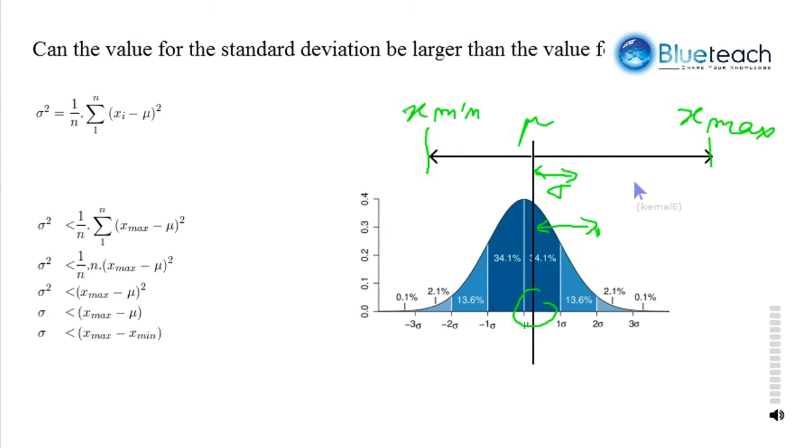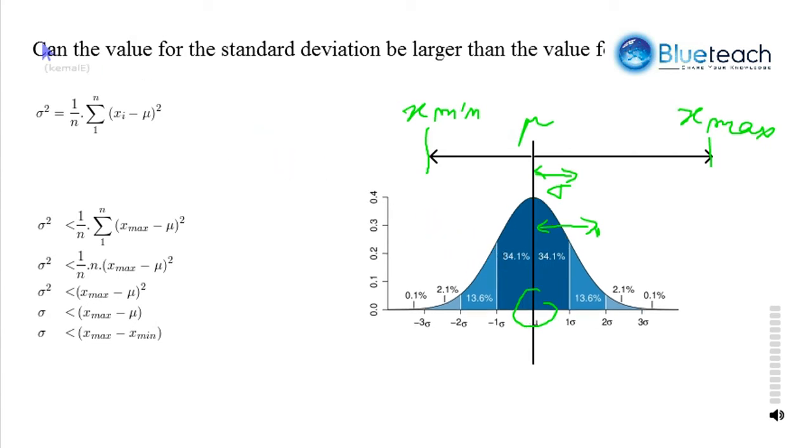So, if I have an observation here, then this distance is smaller than that distance.